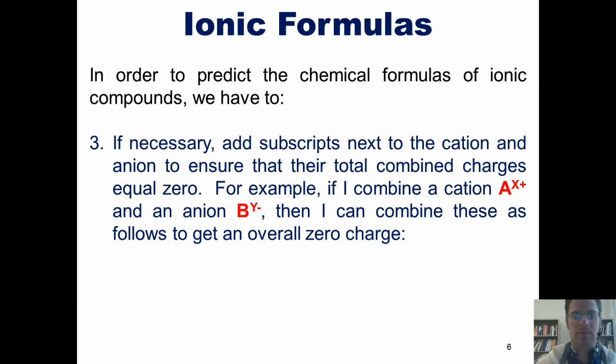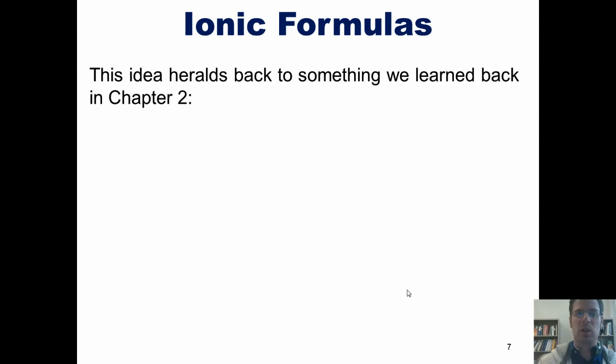For example, if I combine a cation A with a charge of plus x, and an anion B with a charge of minus y, then I can combine them as follows to get an overall zero charge. Putting A, with a plus x charge, together with a B, with a minus y charge, I end up with a final formula of A_y B_x. In other words, the charge of B ends up being the subscript of A, and the charge on A ends up being the subscript of B, with the negatives and positives removed. This, of course, heralds back to something we learned back in Chapter 2. If I have a cation A with a charge of plus x, and anion B with a charge of plus y, I once again just use these charges as the subscripts for their counterparts, A and B, as shown here, to give me my final formula.